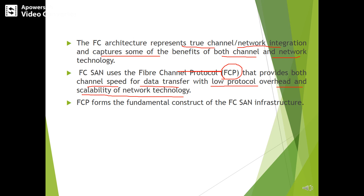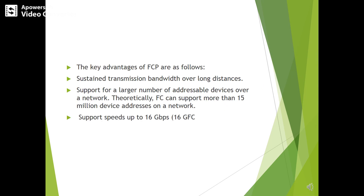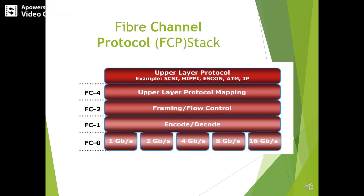The fiber channel protocol forms the fundamental construct of FC SAN infrastructure. The key advantages of FCP include sustained transmission bandwidth over longer distances, which also supports a large number of addressable devices over a network, improving scalability. The speed may be up to 16 gigabits per second. The diagram shows the fiber channel protocol stack, that is the FCP stack.